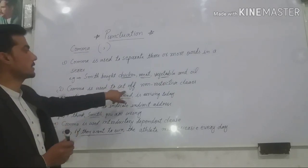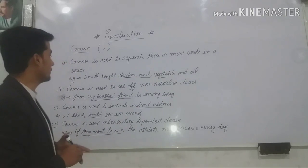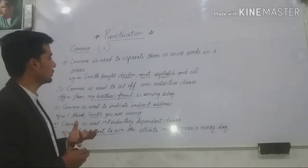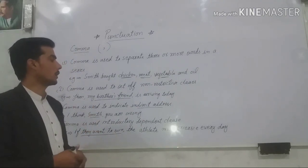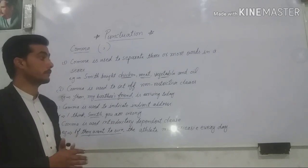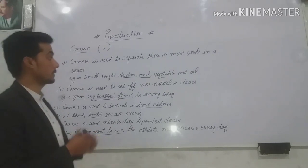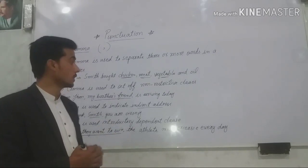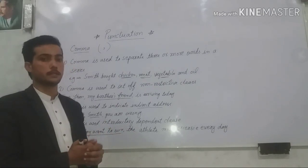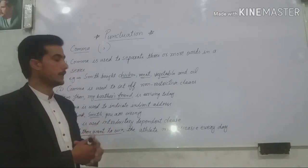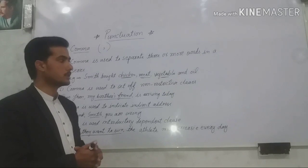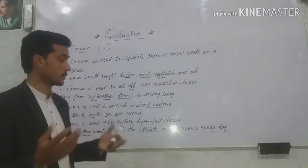Comma is used to set up non-restrictive clauses. Comma can be also used in order to set up or cut, we can say that, non-restrictive clauses. Non-restrictive clauses are those clauses which are not restricted to the sentence. When you just put away that clause from the sentence, so still it will give complete sense. Just look at.